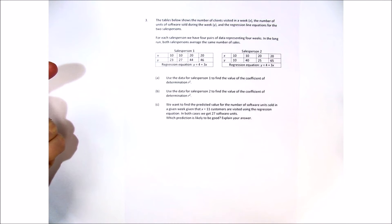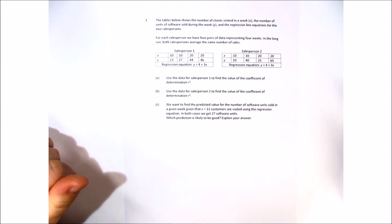Let's go ahead and read through this question and see if we can find some of the higher level concepts that they want us to look for. The table below shows the number of clients visited in a week, the number of units of software sold during the week, and the regression line equation for the two sales persons. For each sales person we have four pairs of data representing four weeks. In the long run both sales persons average the same number of sales.